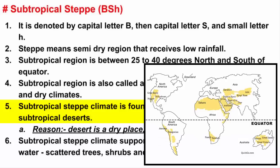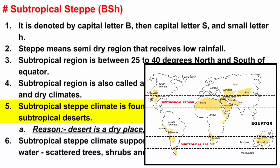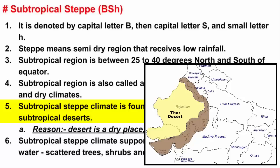The deserts that exist in the subtropical region include areas nearer to the Great Australian Desert, the Sahara of Northern Africa, and places in South-West Asia, especially the Thar desert in India. Looking at the map of India, the Thar desert of Rajasthan is a subtropical desert. So the region around Rajasthan — which includes Gujarat and Madhya Pradesh — is semi-arid or semi-dry. In other words, subtropical steppe climate exists there.